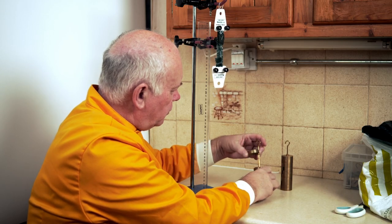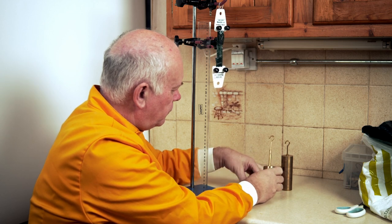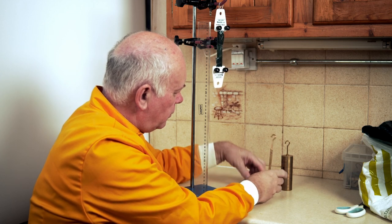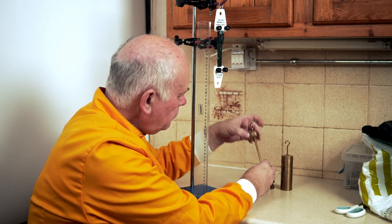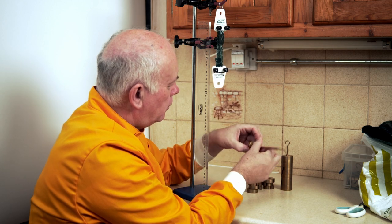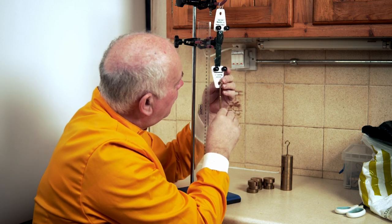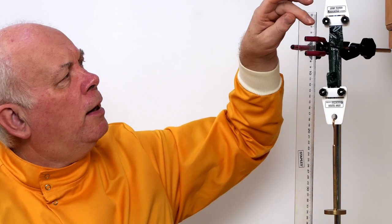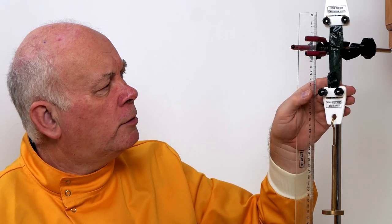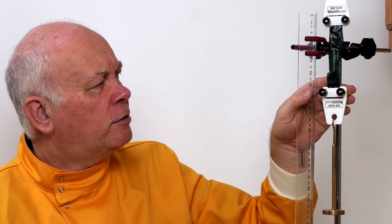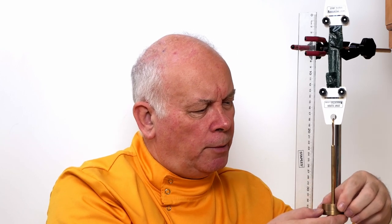I've got a little hook to hold this on, and we've got this suspended now. I'm going to take some weights. We're going to start with 100 grams. At the moment, we're starting at 2 cm, and we're down to about 12.5 cm, so that's 10.5 cm.